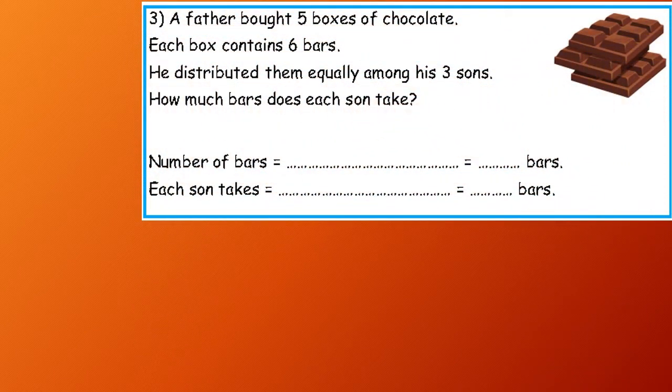Number three: A father bought five boxes of chocolate. Each box contains six bars. He distributed them equally among his three sons. How many bars does each son take?